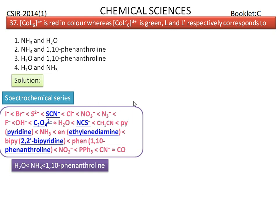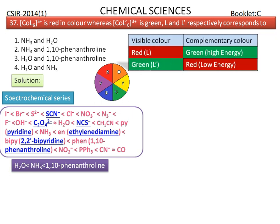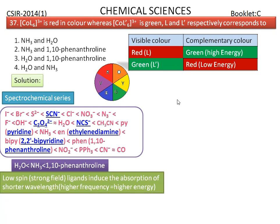The color seen is the complementary color of the wavelength absorbed. Using the spectrochemical series, we can predict observed colors and their corresponding wavelengths. The complex with ligand L is red in color — its complementary color is green, meaning it absorbs green light. Green has higher energy than red.